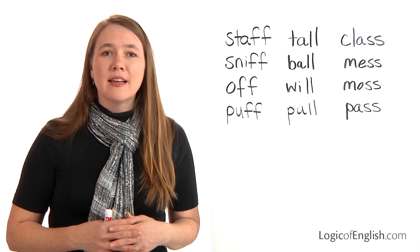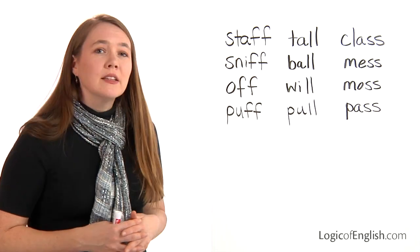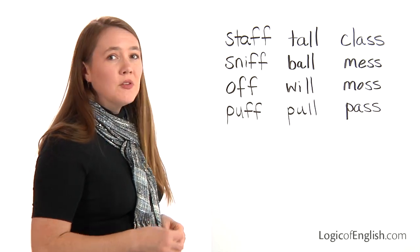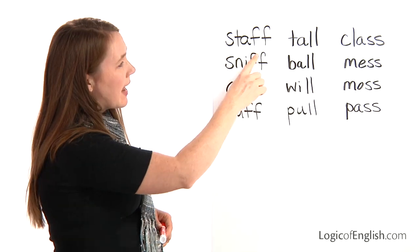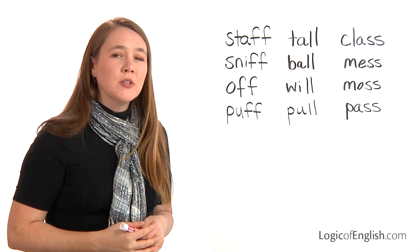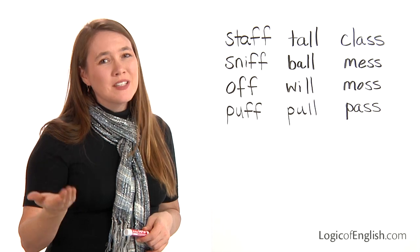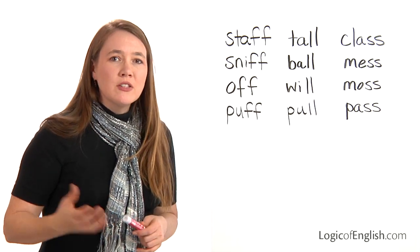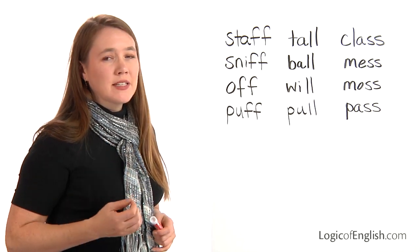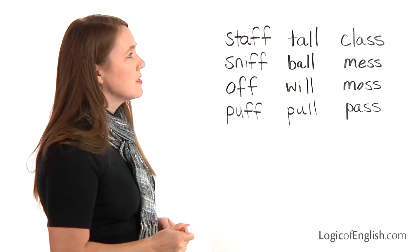Before we teach the list, I'd like to review one of the spelling rules. Let's look at these words together and discover it. We have the words staff, sniff, off, and puff. What do you notice about each of these words? You're right — we're doubling the F. Now, what else do you notice? Let's think about the vowel sound. Are these vowels short, long, or broad sounds?